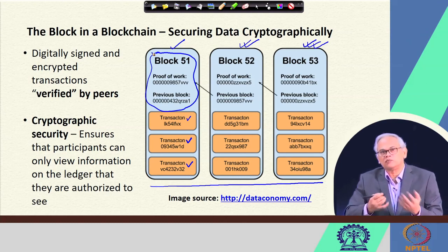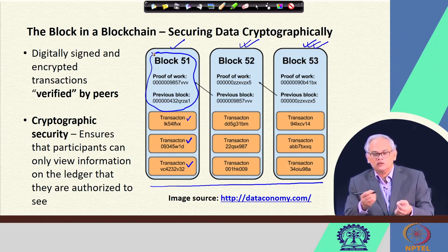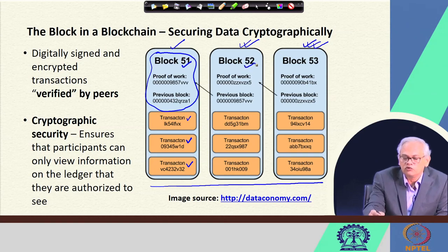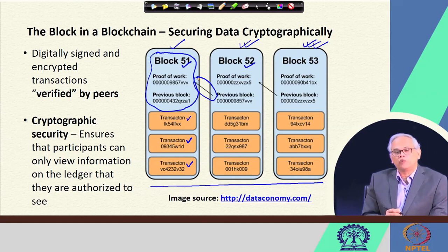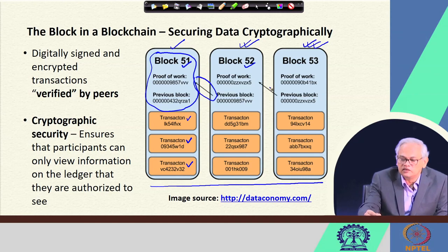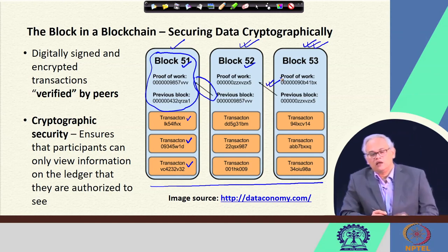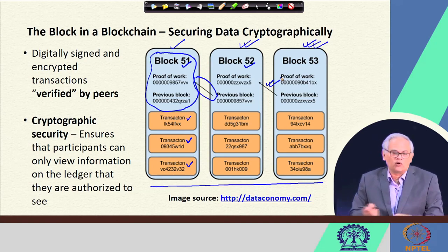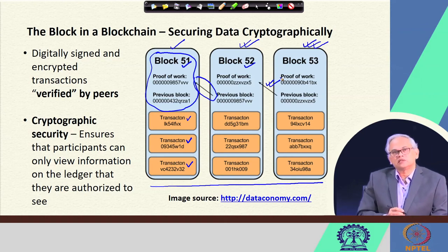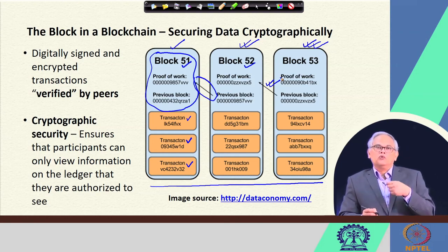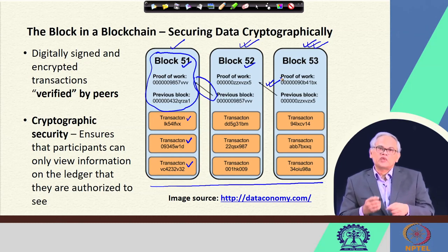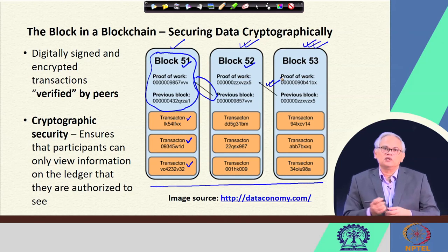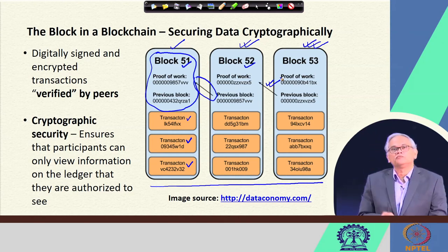The block header contains information used to link one block to the next. Block 52 uses a hash pointer pointing to block 51, connecting them, and similarly block 53 is connected to block 52. As blocks are added, the blockchain gets longer. These transactions are verified by peers — Alice makes a transaction and the information is spread across all nodes in the blockchain, which then verify those transactions.